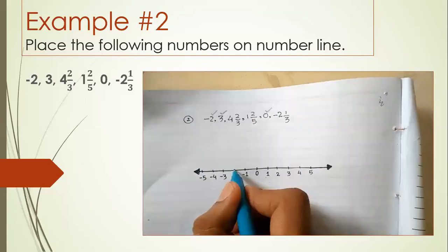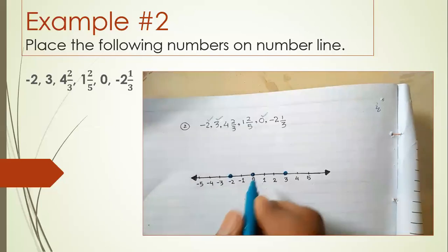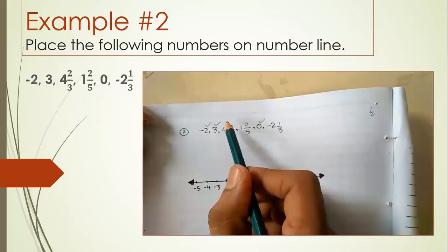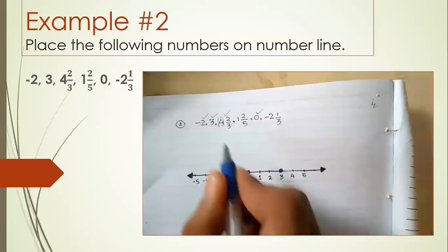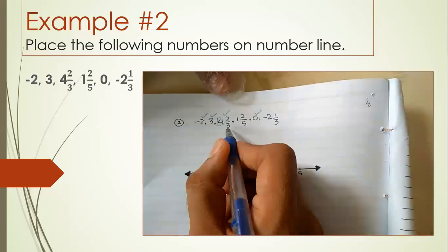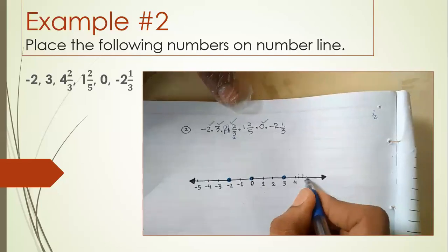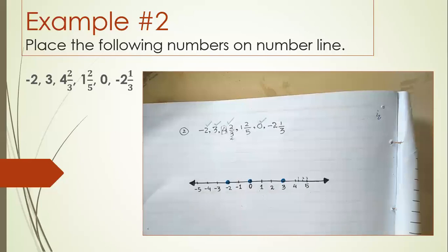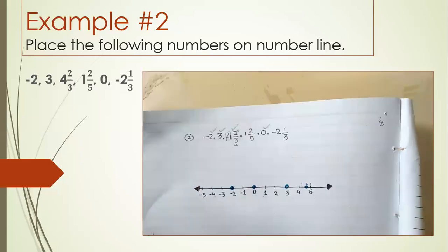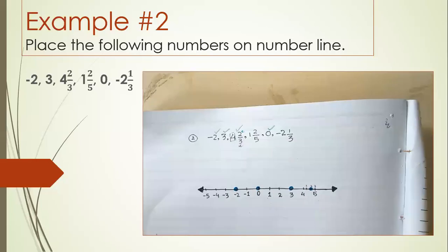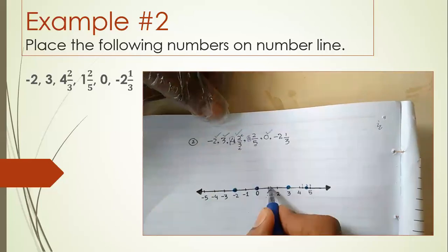Minus two is here, three is here, and zero is here. Now for the fractional forms — the first number is four and two-thirds, where two is the numerator and three is the denominator. Four is here; since the denominator is three, we break this portion into three equal parts and mark on two. The second fractional form is one and two-fifths: one is here, denominator is five, so we break this portion into five equal parts.